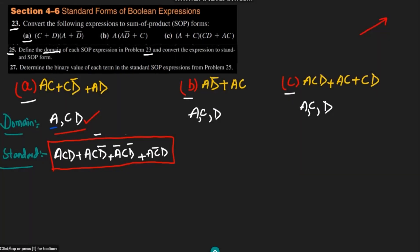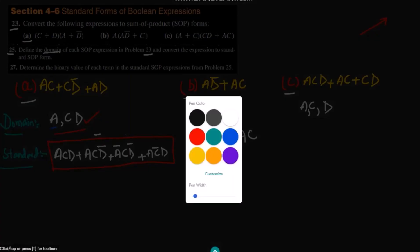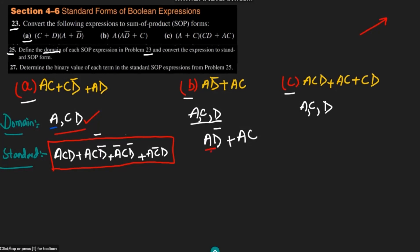Here we can very clearly see that the domain is {a, c, d}. We have the terms ad' and ac. We can easily see that ad' has a deficiency of c, and ac has a deficiency of d. According to Boolean algebra, we have to multiply by (c + c') and (d + d') respectively, because these are always equal to 1.